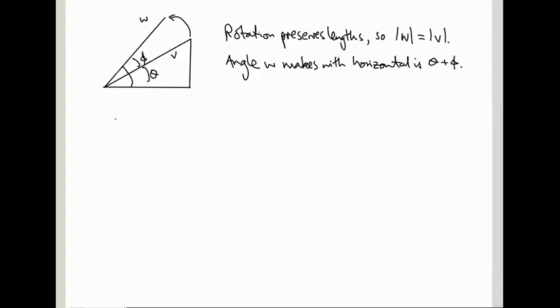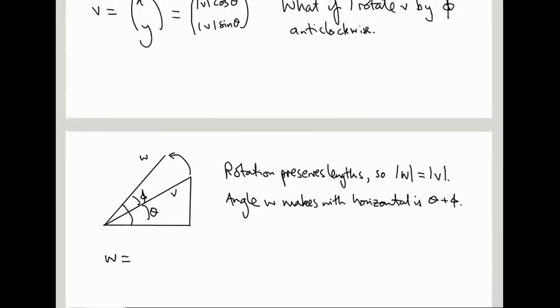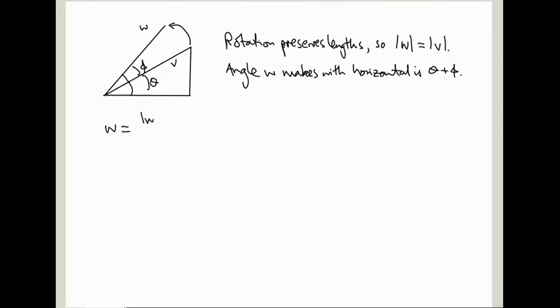So the angle that W makes with the horizontal is theta plus phi. So actually we know what W is, right? It's just by comparison with this formula here it's going to be length of W times cos of the angle, length of W times sin of the angle, and the angle is theta plus phi, it's this total angle here. And actually we know a little bit more because we know the length of W is the length of V, so let me change these W's to V's.